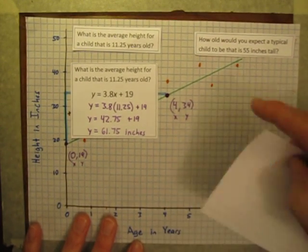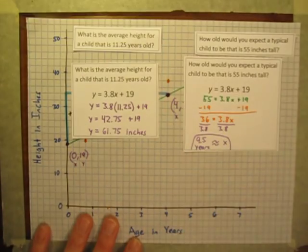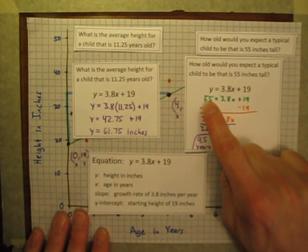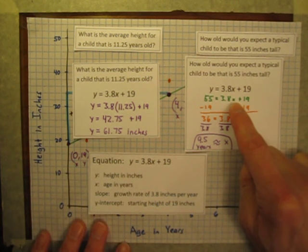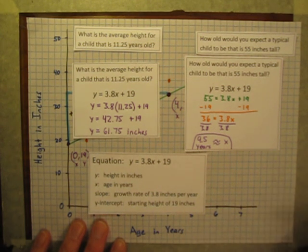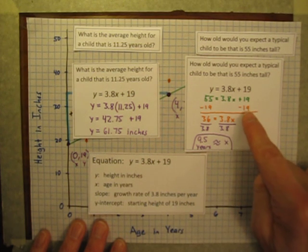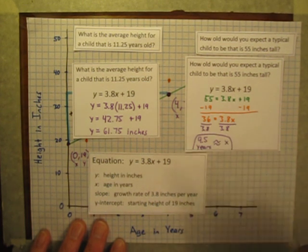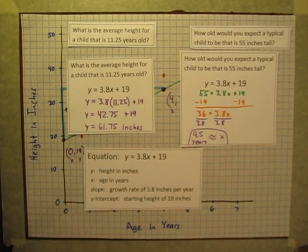And finally, what about a child that's 55 inches tall? Inches are y values. Remember inches are y values. So I'm going to put 55 inches in for y. And I see 55 inches is equal to 3.8 inches per year times some unknown number of years plus 19 inches at birth. And I can solve for x. It's just a two-step equation. What would that value of x have to be? Let's get x by itself. Minus 19. Minus 19. Divide by 3.8. Divide by 3.8. And I see a 55 inch child would have to be about, on average, 9.5 years old.